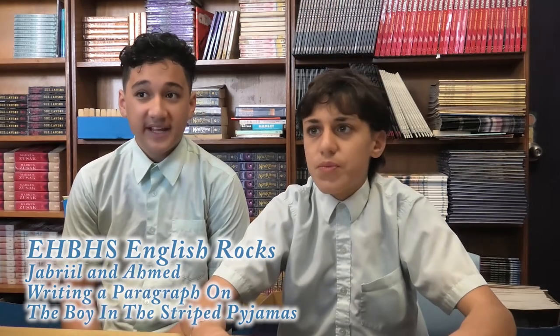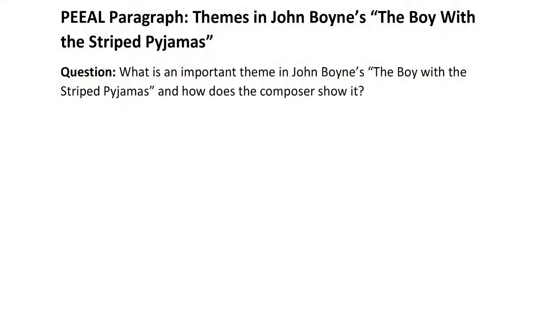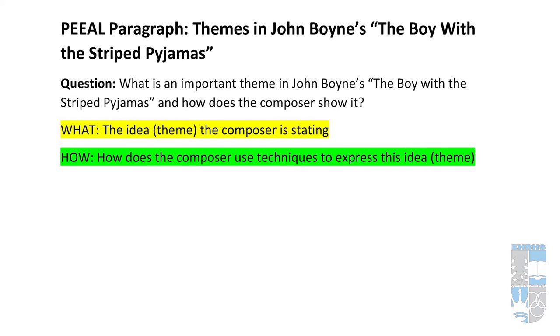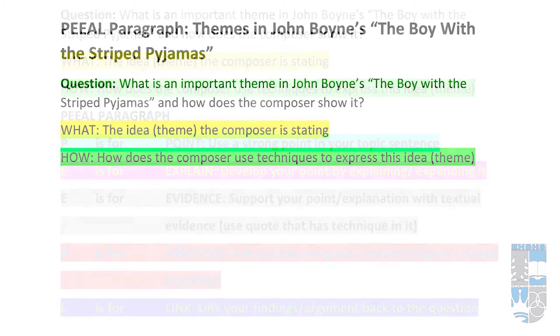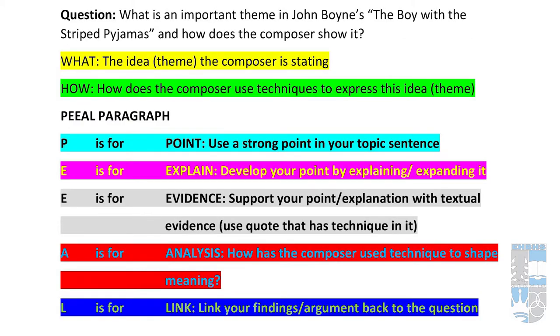Let's return to paragraph writing and our PEAL structure — it is a formula for writing strong paragraphs. Imagine we have a question: What is an important theme in John Boyne's The Boy with the Striped Pyjamas and how does the composer show it? This question has two parts: what is the important issue, and how, using literary techniques, does Boyne express this? Let's have a quick refresh. P is for Point. E is for Explain. Second E is for Evidence. A is for Analysis. And L is for Link. So let's begin writing our paragraph.